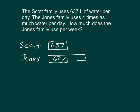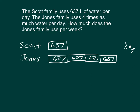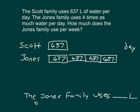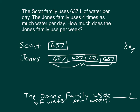How much more water does the Jones family use? The Jones family ends up using four times as much. So in our drawing, it's not just 637 once — that's two times as much, that is three times as much, and that is four times as much. We're writing out a focused answer: this is the amount they use in a day, so the expression we are going to solve is 637 times 4.